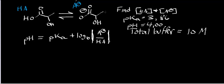Welcome back. In the last video we looked at the simple case of Henderson-Hasselbalch problems in which we had known concentrations of the conjugate acid and conjugate base, we knew the pKa, and we were asked to find the pH. That was a really simple calculation, and it was certainly a lot easier than what we're going to find here.